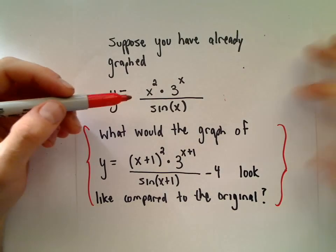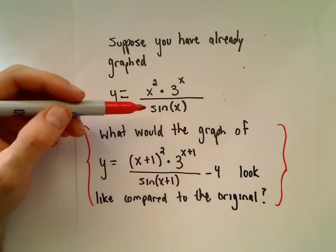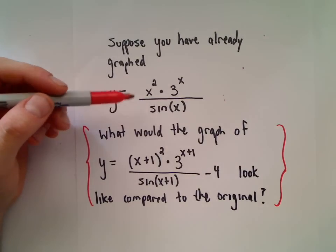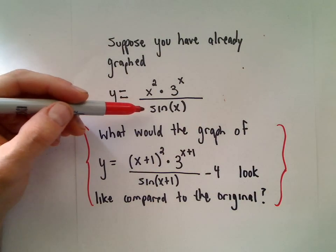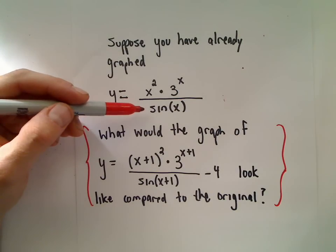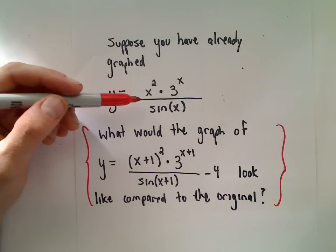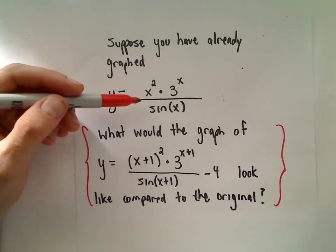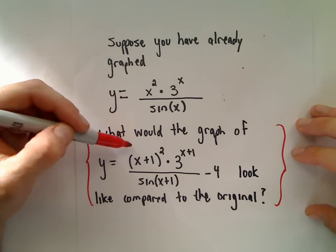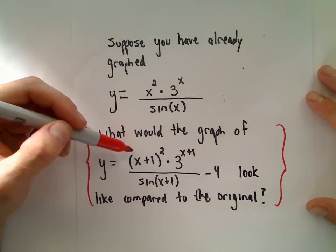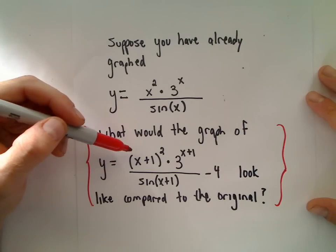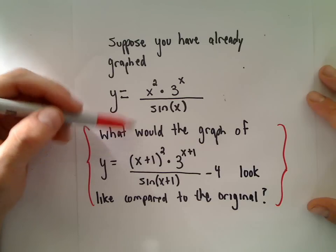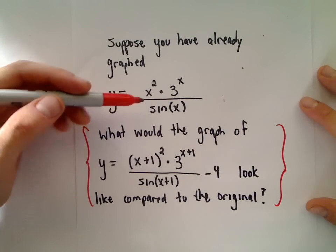Suppose you already have the graph of (x³ · 3^x) / sin(x). If you haven't seen sin(x), don't worry - it's just a trigonometric function. The main idea is we're replacing x's. We want to graph (x+1)² · 3^(x+1) · sin(x+1) - 4 and think about what that looks like in terms of transformations compared to the original.